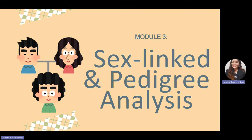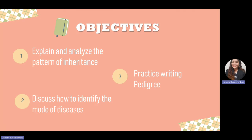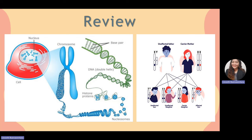Good morning everyone. We're going to discuss Module Number Three: Sex-Linked and Pedigree Analysis. Here are the objectives: first, we're going to explain and analyze the pattern of inheritance; second, you're going to discuss how to identify the mode of disease by analyzing a pedigree; and lastly, you're going to practice writing a pedigree, which will be our Performance Test Number Two.